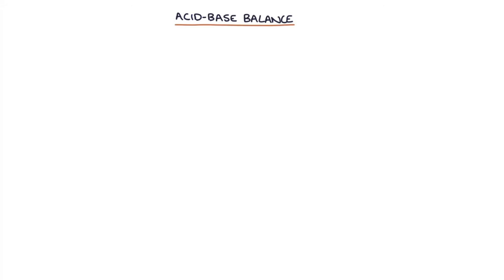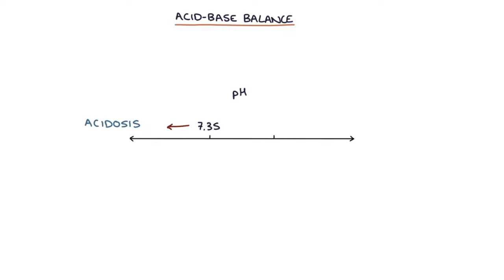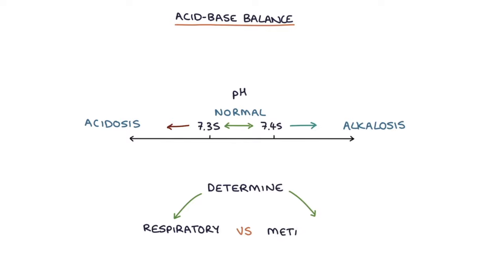Next, let's talk about acid-base balance. The next step when analysing an ABG is to check the acid-base balance. If the pH is under 7.35, this indicates acidosis. If the pH is between 7.35 and 7.45, this is normal. If the pH is above 7.45, this indicates alkalosis. Once you identify an acidosis or alkalosis, you need to determine whether the cause is respiratory or metabolic.